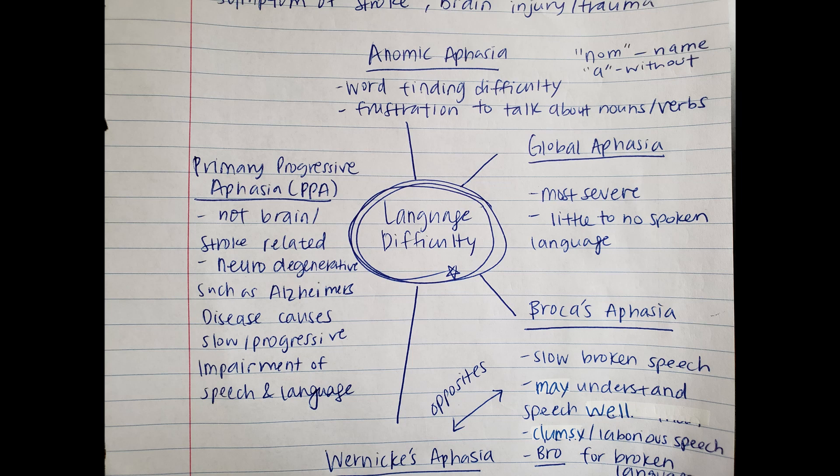Let's start with global aphasia. That one is the most severe out of all the kinds of aphasia, and it basically means that there is little to no spoken language ability anymore. I think that one's the easiest to remember because we think global — global impact — meaning all of spoken language is entirely impeded.